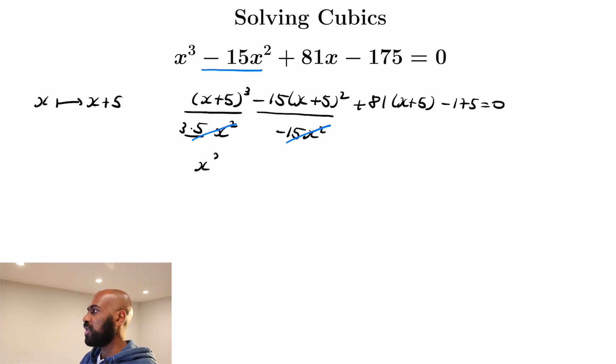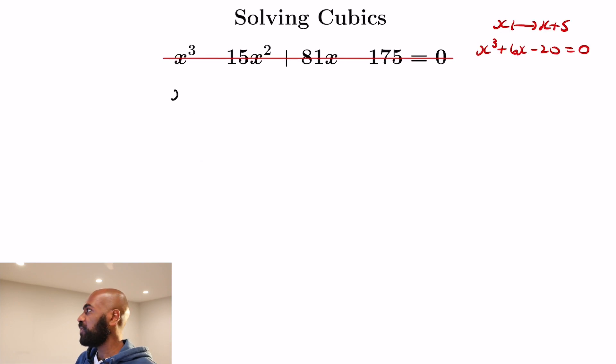Now if you actually plug x plus 5 in and expand everything out here, we'll end up with the cubic equation x cubed plus 6x minus 20. So I want to look at a systematic way for finding a real root to an equation like this, and it involves a really interesting and somewhat clever substitution.